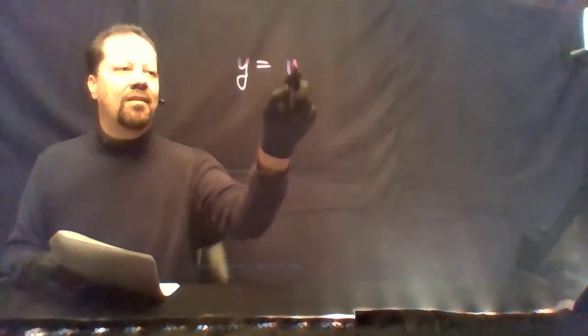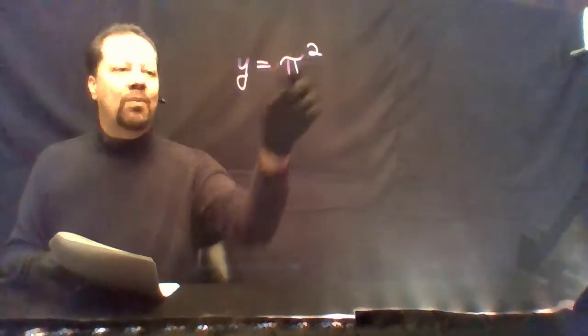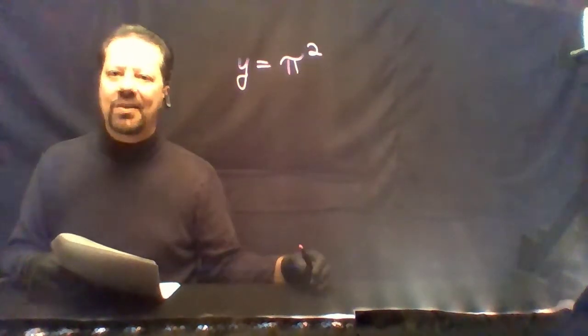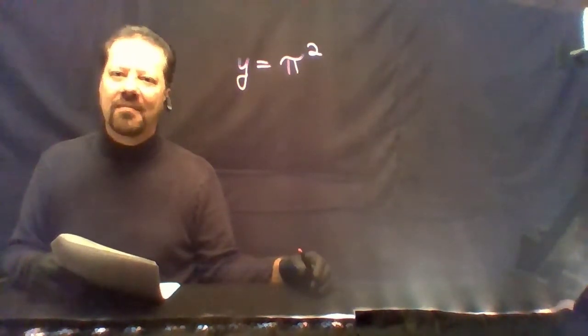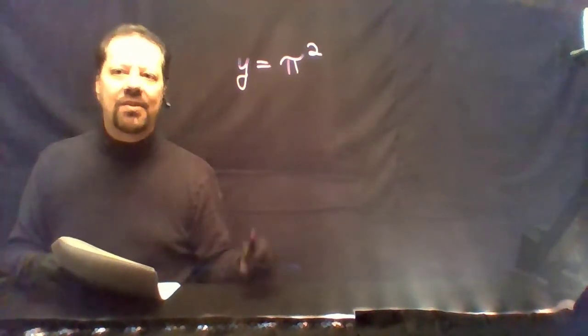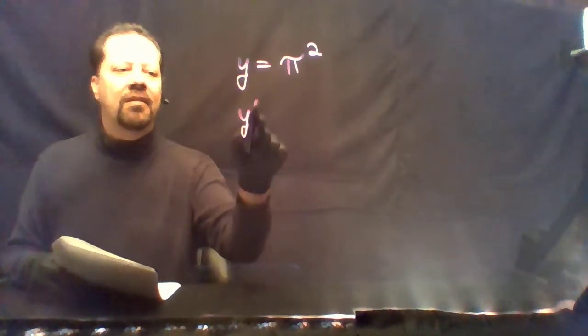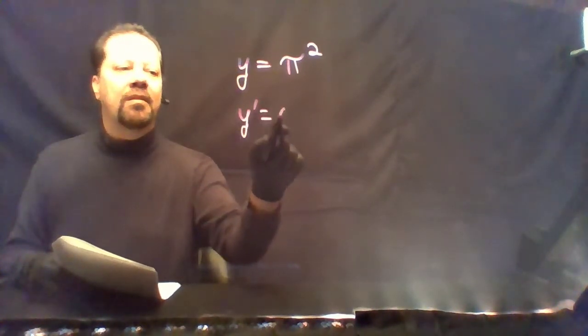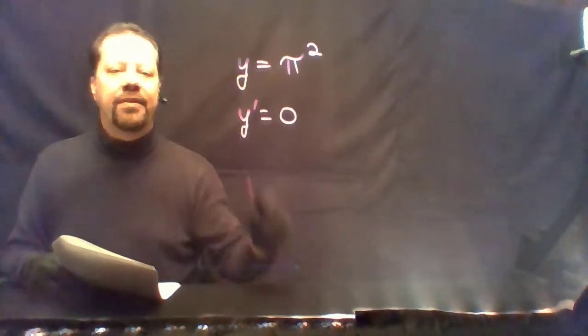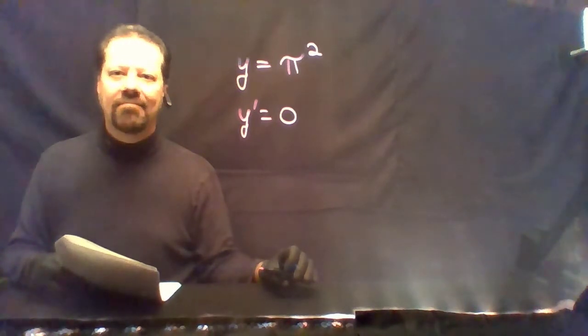Next, we have y equals π² · x². This is obviously a trick question. The derivative is zero because π² is a constant.